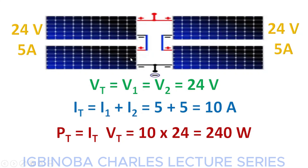Now if we connect these two series sets in parallel, remember that connecting panels in parallel increases current while maintaining voltage. The total voltage V_total equals V1 equals V2 equals 24 volts. The total current is the sum of the current ratings of each series set: 5 amps plus 5 amps equals 10 amps. Therefore, the total power P_total equals I_total times V_total equals 10 times 24 equals 240 watts.